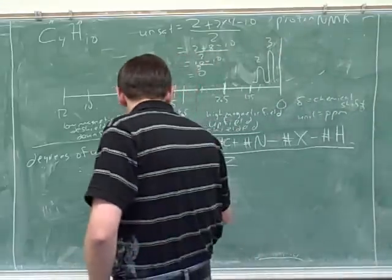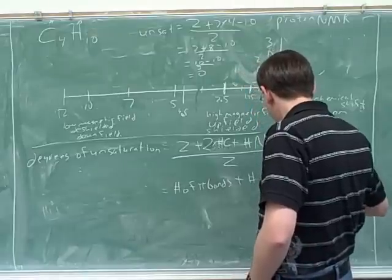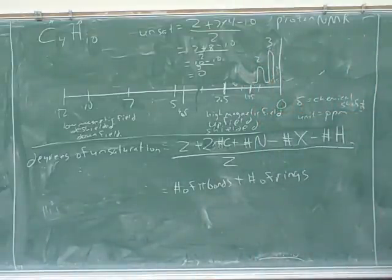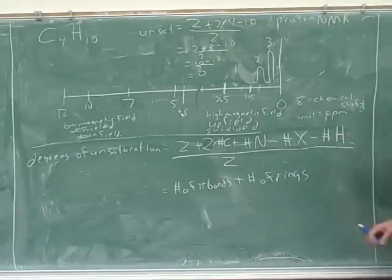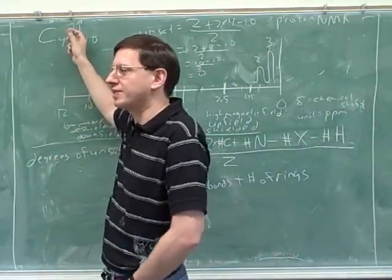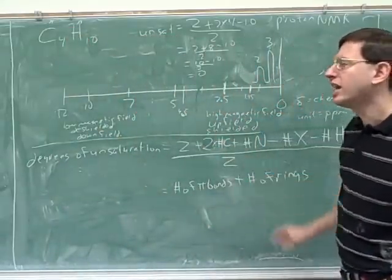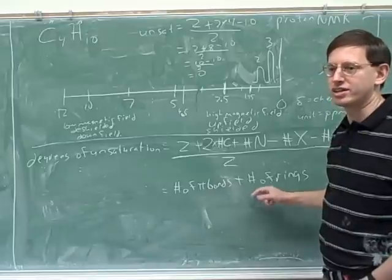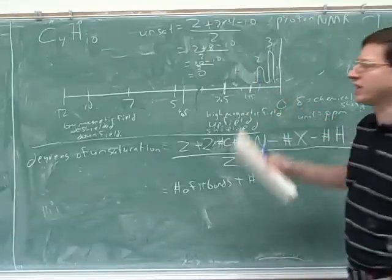And what does the degrees of unsaturation tell you? It tells you the number of pi bonds plus the number of rings. The number for the degrees of unsaturation tells you the number of pi bonds plus the number of rings. So in this case, since the degrees of unsaturation was zero, we know that this compound has no pi bonds and no rings. That was maybe kind of already obvious in this particular case. But in more complicated problems it's very helpful to know if there's any double bonds, say, or any rings. So this is something you should do for every spectroscopy problem.